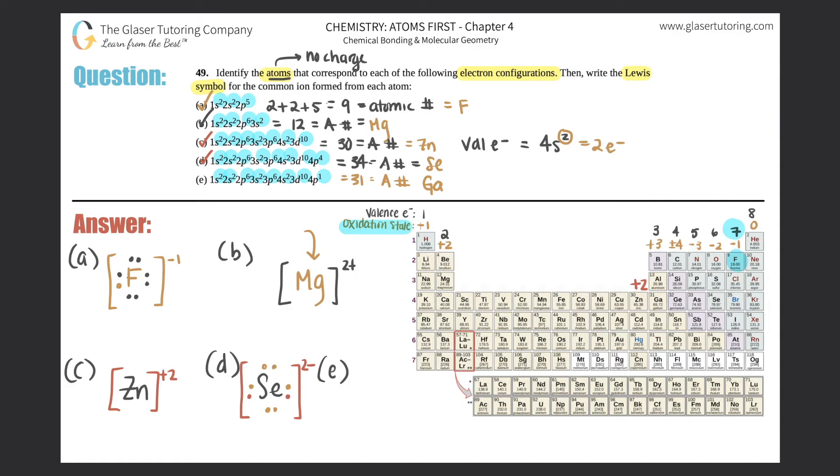And then last but not least, we have gallium. Gallium is over here. It has three valence electrons and it always has a +3 charge, which means that it will lose those three electrons. So gallium had one, two, three, but now when it becomes an ion, it has to lose three electrons. It's a +3.